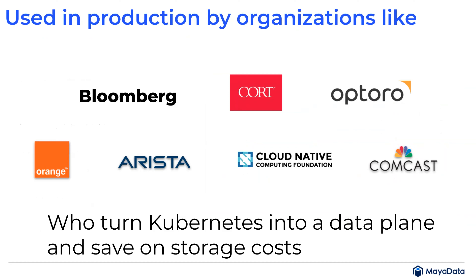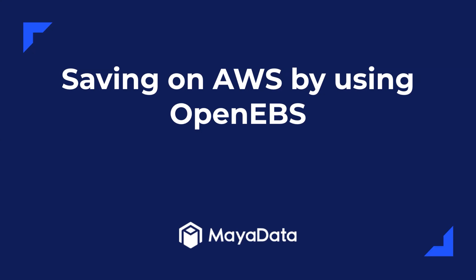OpenEBS is used in production by very well-known organizations who have crossed the chasm in terms of Kubernetes adoption — people who understand Kubernetes very well — like Bloomberg, CNCF, Optro, and others. There are many public references available on the adopters.md page on GitHub, where you can learn about use cases from users like Comcast, Orange, and Arista. Even the Cloud Native Computing Foundation itself uses OpenEBS in production. All these users turn Kubernetes into a data plane and save on storage costs.